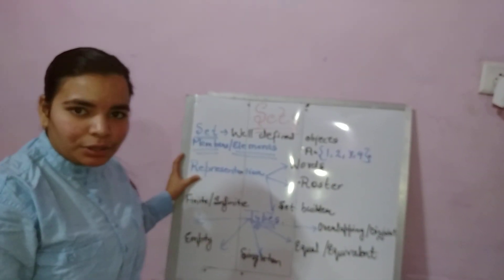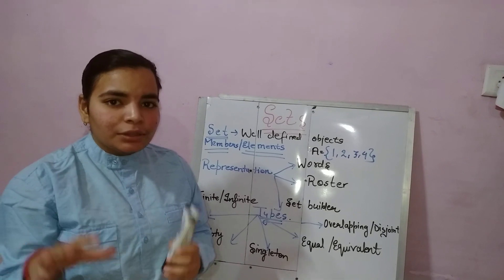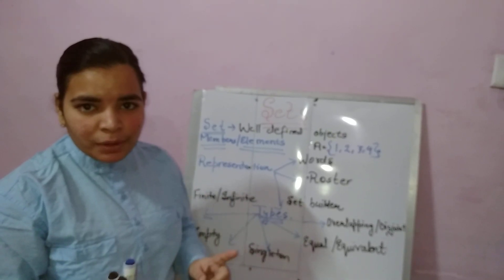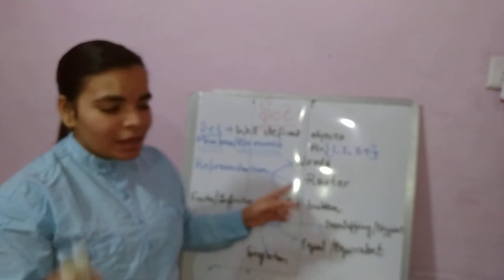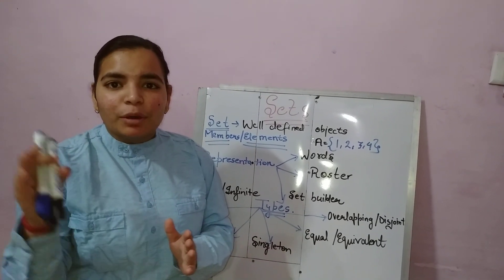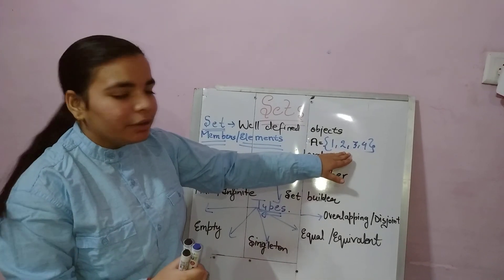Now the third concept is representation — how do we represent them? We can represent sets in three particular ways. The first one is simply by words, by stating. Like I say, the set of natural numbers from 1 to 4 — I am representing them in the form of words. The second is in the roaster form, also known as tabular form. In this, we represent it with curly braces and the elements are separated with the help of commas. This is the tabular or roaster method.